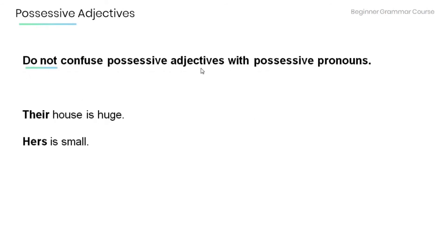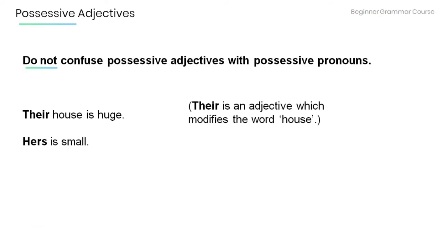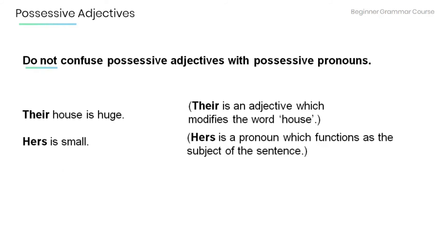Remember not to confuse possessive adjectives with possessive pronouns. Read the following sentences and decide whether the words in bold are possessive adjectives or possessive pronouns. 'Their house is huge' — 'their' is an adjective which modifies the word 'house.' 'Hers is small' — 'hers' is a pronoun which functions as the subject of the sentence.